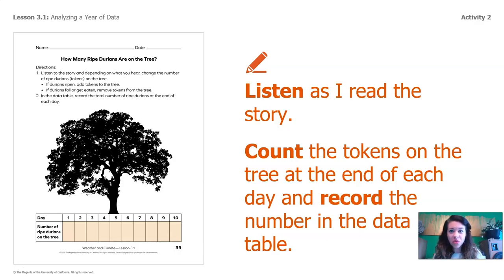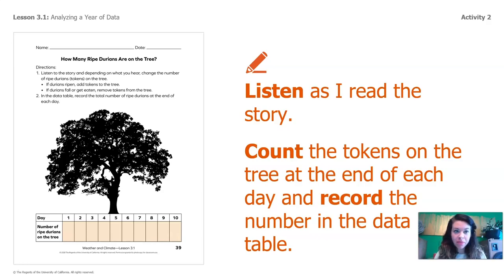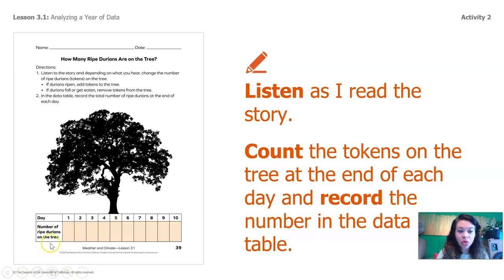Here's how this is going to work: you're going to listen as I read the story, count the tokens on the tree at the end of each day, and record the number in the data table. Depending on what happens in the story, you're going to change the number of ripe durians on the tree. If durians ripen, you add pieces to your paper. If durians fall down or get eaten, you remove durians from your paper. At the end of each day, write down the total number of ripe durians on the tree. We're going to keep track over 10 days.